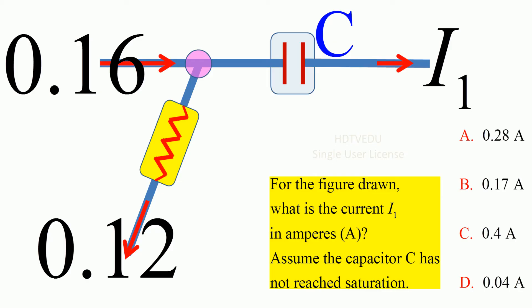We have a current of 0.16 amperes entering the junction, we have a capacitor C, and then we have 0.12 amperes leaving. So we have 0.16 entering, 0.12 leaving, and we have I1 through the capacitor leaving.